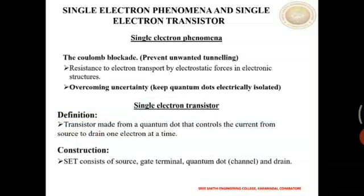When both gate and bias voltage are zero, the electrons do not have energy to enter the dot and no current flows through it. As the bias voltage between source and drain is increased, an electron can pass through the dot when the energy of the system reaches the Coulomb energy. This effect is called the Coulomb blockade effect.